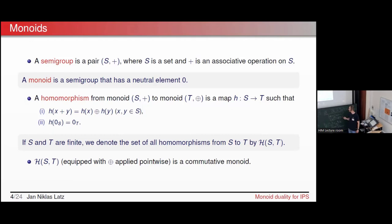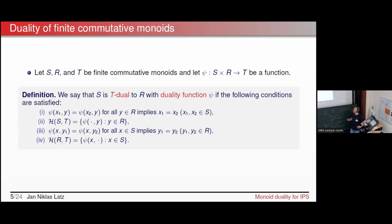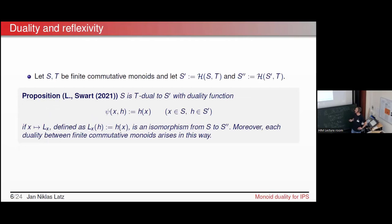With this in mind we can define a duality of finite commutative monoids: we assume we have three finite commutative monoids and some function mapping from the product of S and R to T. We say S is T-dual to R with duality function ψ if certain conditions hold. Basically we recover the monoid of all homomorphisms if we fix either one element y in R on x in S; and if this duality function coincides for all y in R, that already implies that the x values coincide in S.